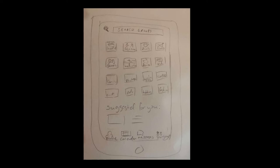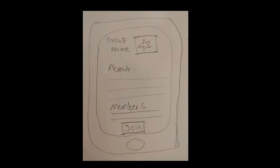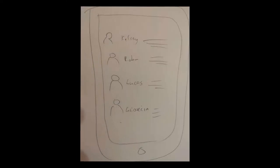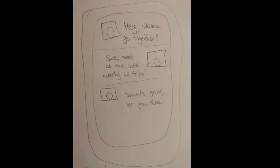Once a group has been found, information for that group and its members is displayed, and the user is given the opportunity to join that group and become notified of its events. Once the user presses join, they can choose to join with someone else, and are shown a list of like-minded individuals that are also interested in the group. They can then initiate contact with them to make plans for going together, or even just for a conversation.